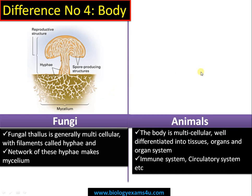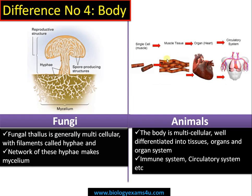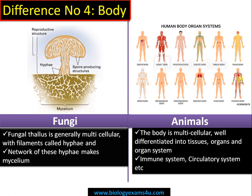Whereas in the case of animals, the body is multicellular and well differentiated into tissues, organs, and organ systems. For example, in the circulatory system, a single muscle cell organizes to form muscle tissue, then forms an organ — the heart — and finally forms a complete circulatory system. Animals have many such systems including digestive, respiratory, and immune systems.